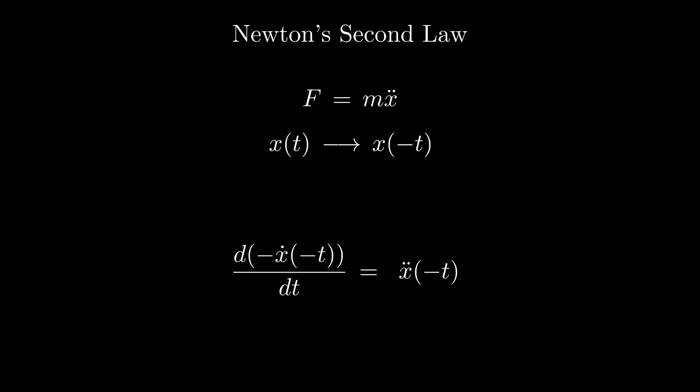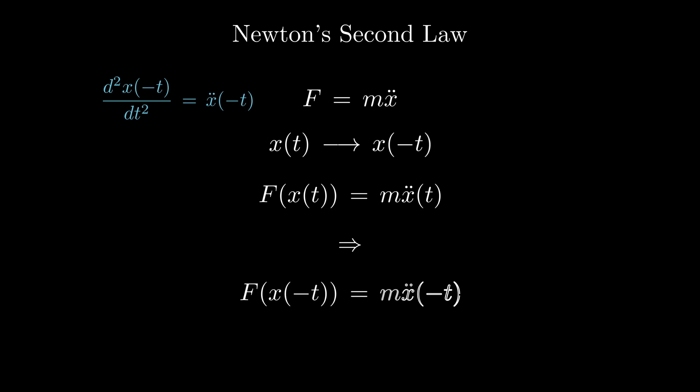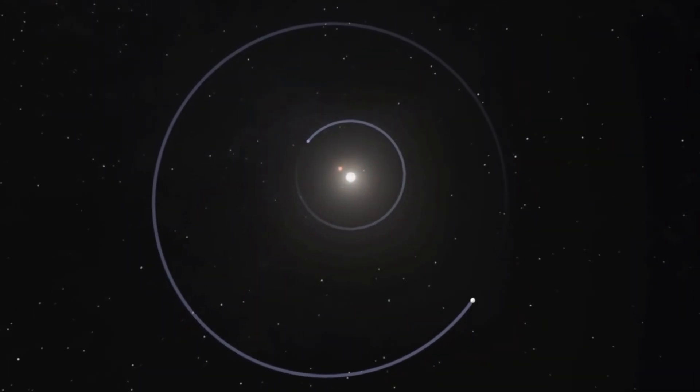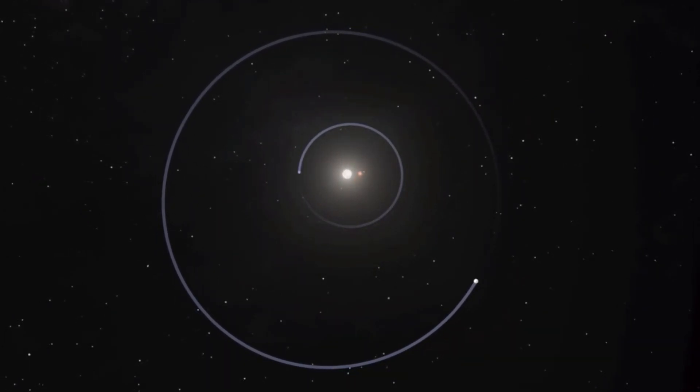So, if x of t is a solution to our equation, x of minus t is also a solution. Therefore, just by looking at any Newtonian process, it is simply impossible to say if it evolves forward in time or not.